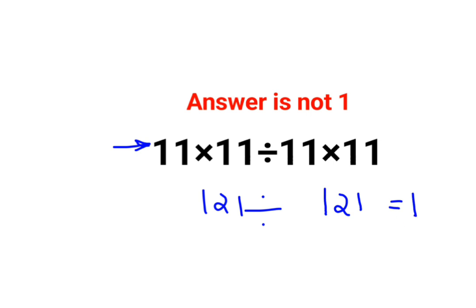Now the problem is a lot of people don't realize that multiplication and division hold equal precedence. So in sums like these, you should just go from left to right.